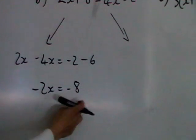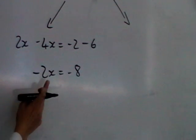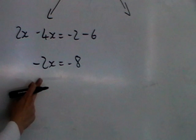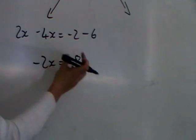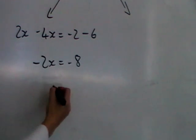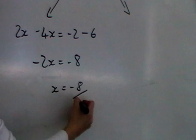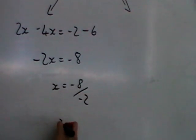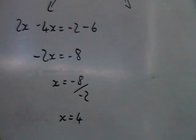Now to get x on its own, we're going to divide both sides by minus 2. It doesn't change sign — so instead of multiplying by minus 2, we will be dividing by minus 2. A negative divided by a negative gives us positive, and 8 divided by 2 is 4.